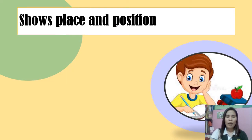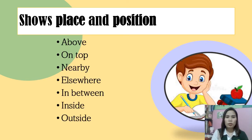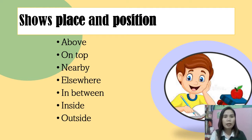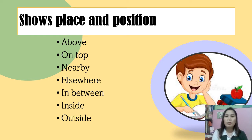Next, transitions that show place and position. Examples include: above, on top, here, nearby, elsewhere, between, inside, outside. These transition words show relationships in space — they tell us where something is in relation to something else. More examples include: near, below, behind, in front, and there.